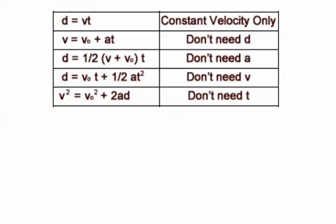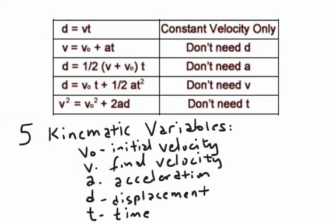Now in those four equations, we notice that there are five different variables. Those five variables are v0, v, a, d, and t: initial velocity, final velocity, acceleration, displacement, and time.